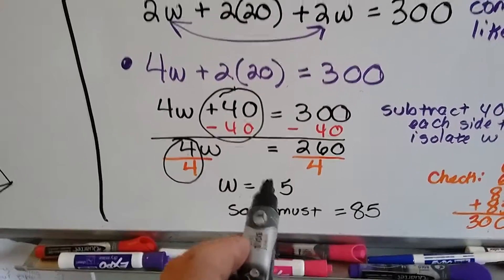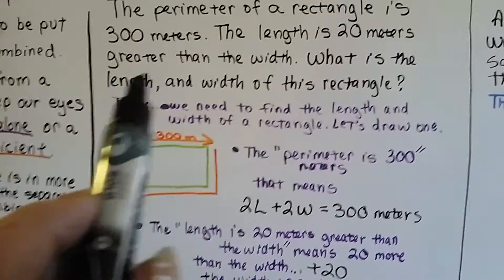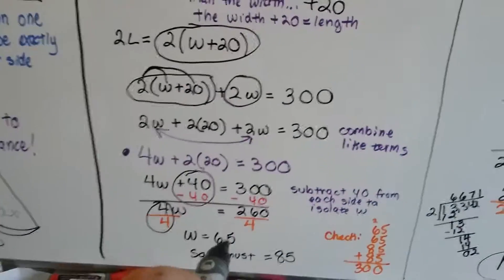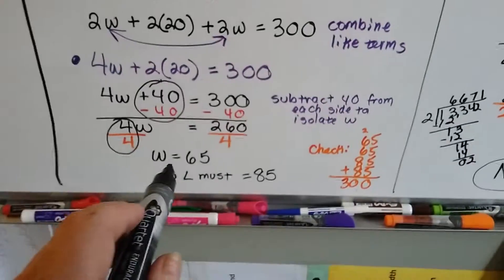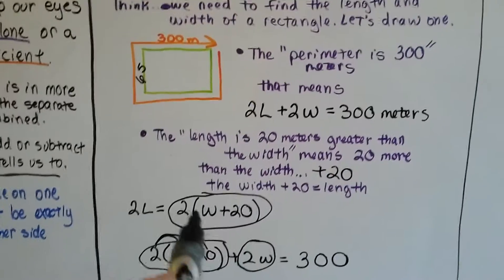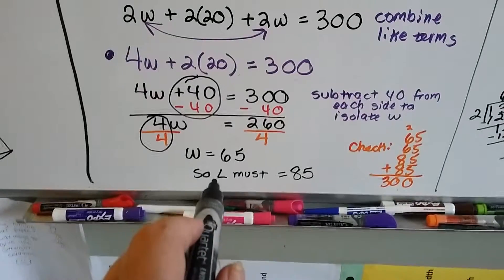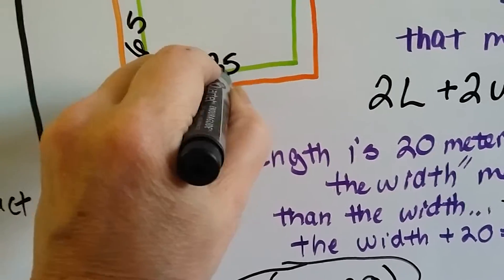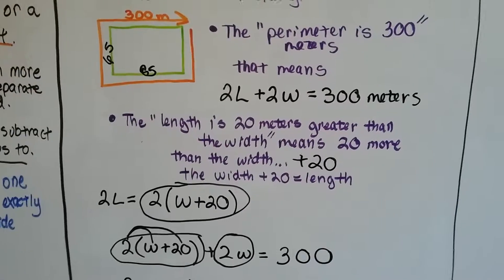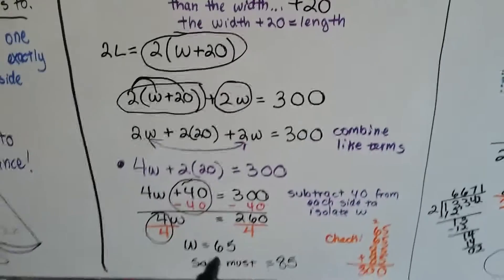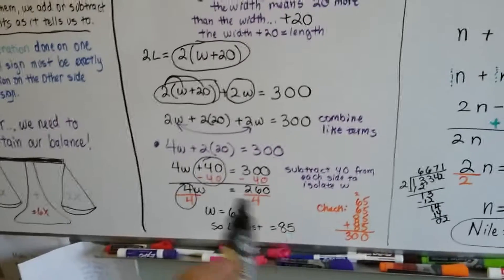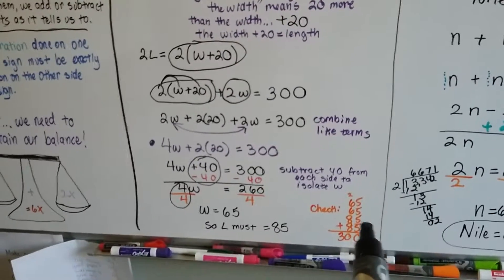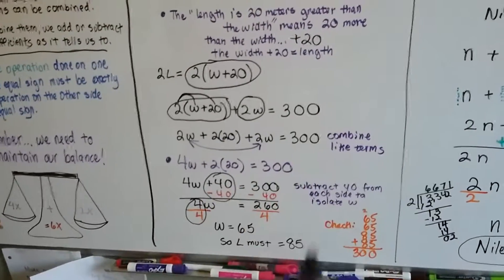We're not done yet — the problem asks for both the length and width. The width is 65. And since the length equals the width plus 20, the length must be 65 plus 20, which is 85. We've got both measures. I verified it: 65 + 65 + 85 + 85 = 300, which matches the perimeter.